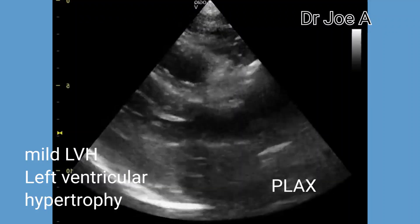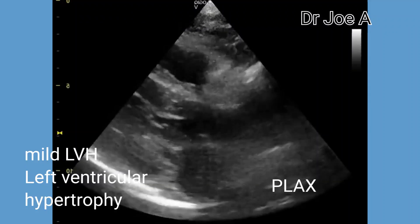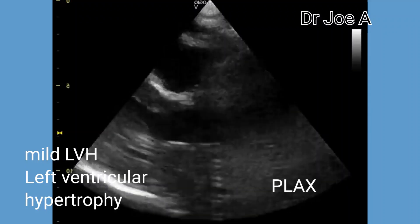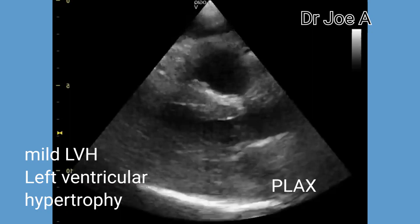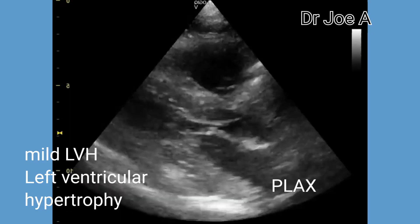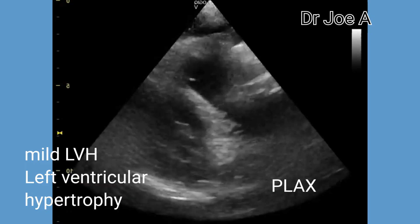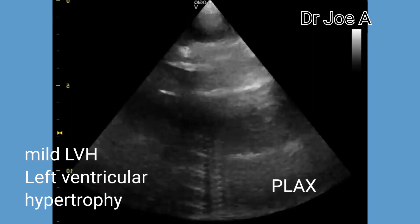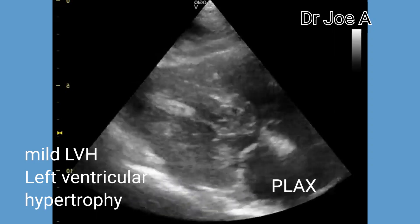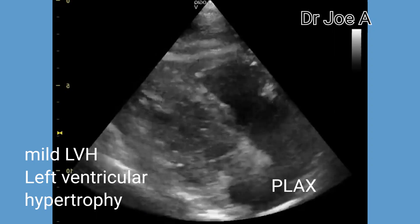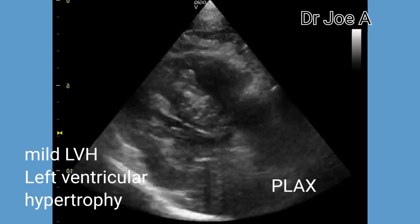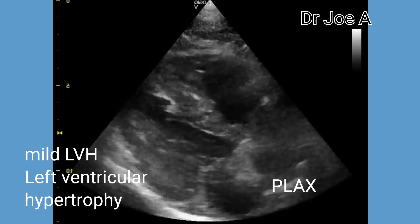This is a patient of mild hypertension. The parasternal long axis view shows mild hypertrophy of the interventricular septum. In this patient the interventricular septum measures 13 millimeters.